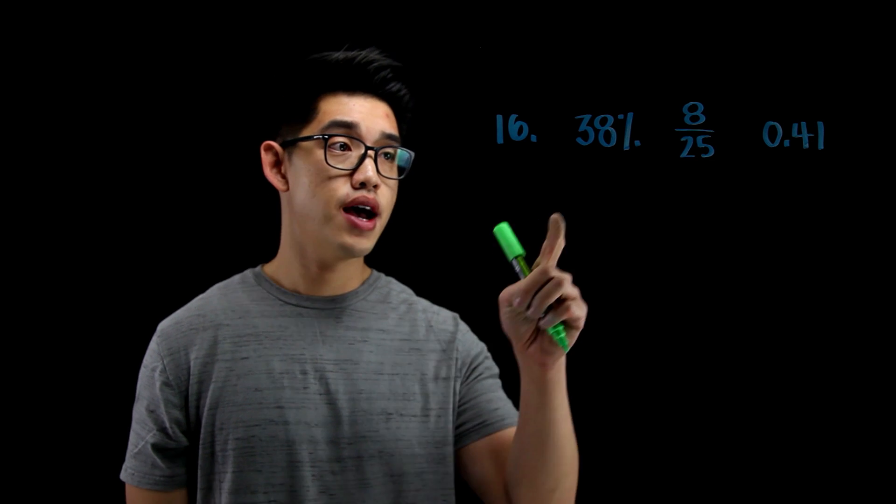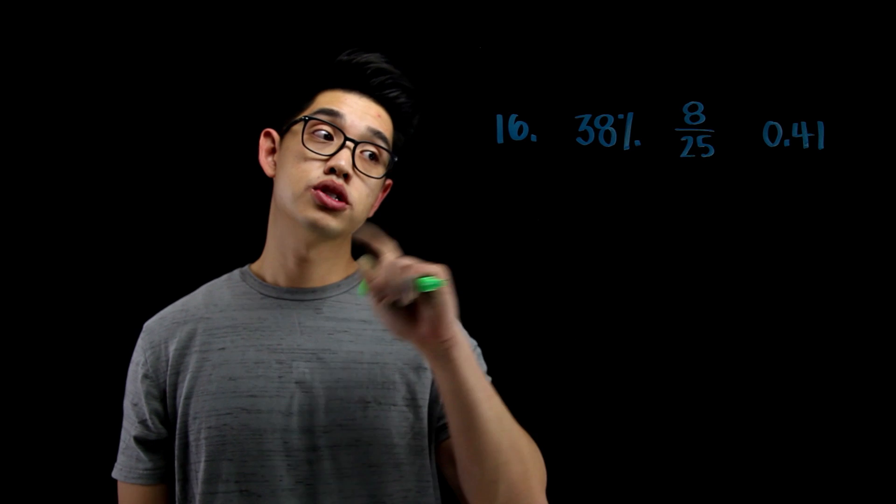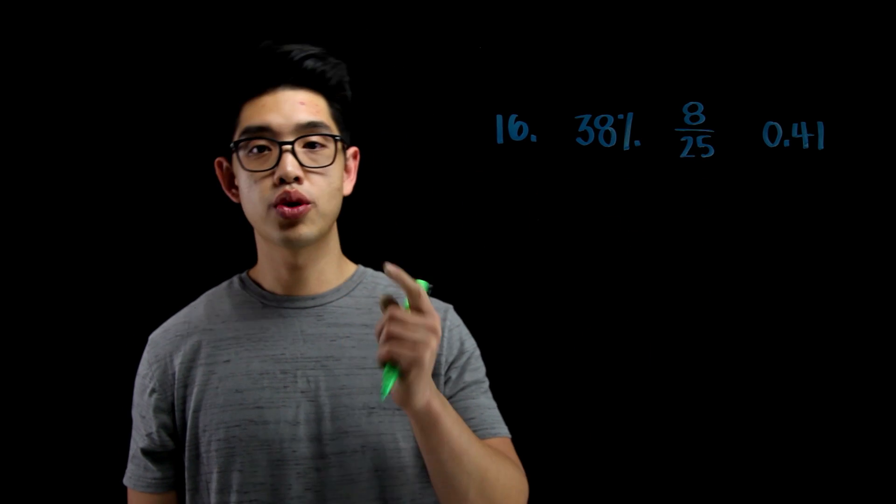For number 16, I have three numbers. I have 38%, 8 over 25, and 0.401. My goal is to try to list these three numbers from least to greatest.